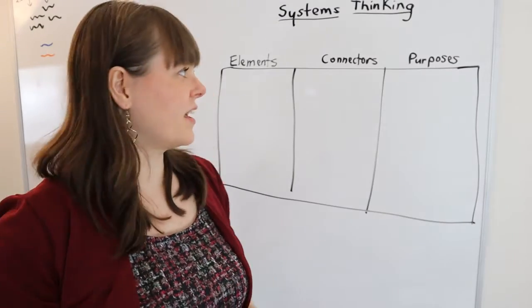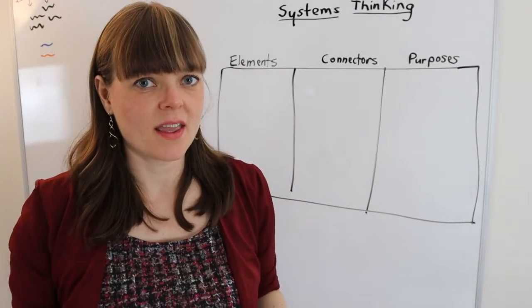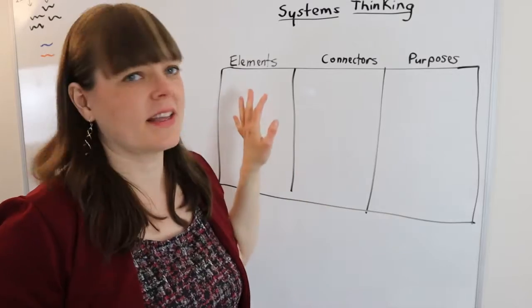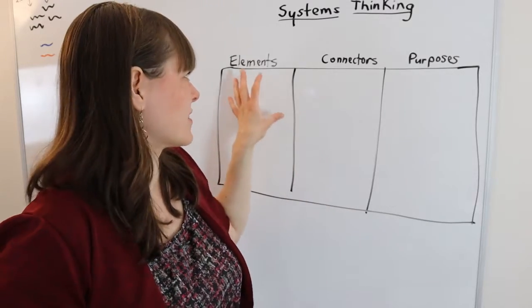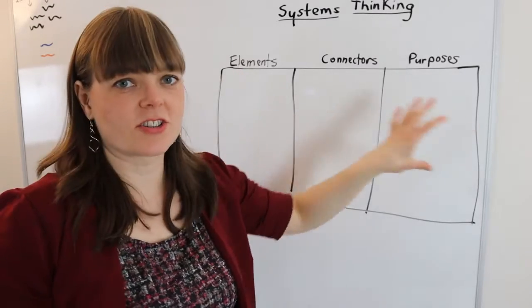The first question is what is a system? She defines a system as having three things: elements, connectors, and purposes.